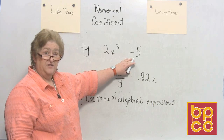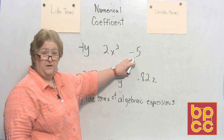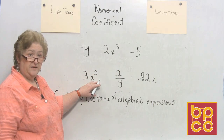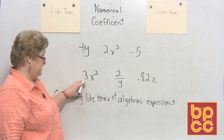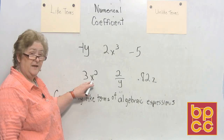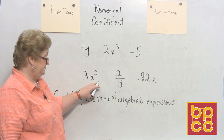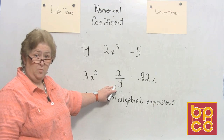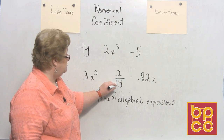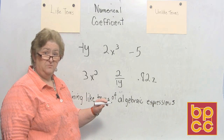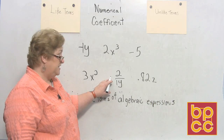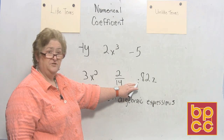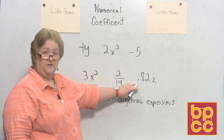Negative 5 is a term — it has no variables and no exponents. 3x squared is a term; the coefficient is 3, variable x, exponent 2. Remember, if you don't see a number it's assumed to be 1. And 0.82z is also a sample of a term.